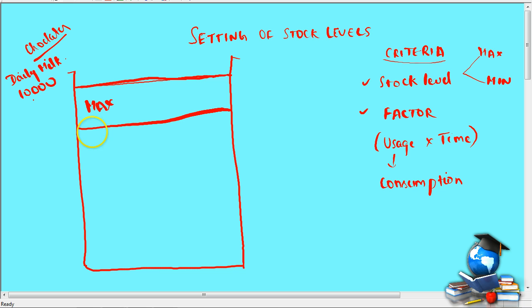Once this you have understood, we said that we want to have a maximum level of ten thousand dairy milk chocolates. So this is a maximum level. There will also be a maximum factor. When I say maximum factor, I am just going to write factor here. When I say maximum factor, what does that mean? It means that at this point, maximum consumption or maximum usage into maximum time.